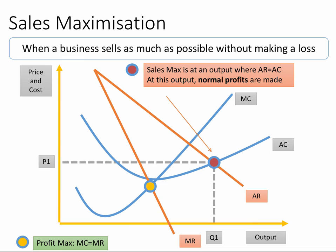Contrast that with sales maximisation. Sales maximisation is when a firm tries to produce as much output as it can — grow its sales, grow the business — subject to the constraint that it needs to make at least normal profit. You make normal profit where the average cost and average revenue curves meet at the break-even point. That's where normal profits are made. It's a higher output than revenue maximisation and involves a lower price, where P1 equals cost — covering your cost and maximising sales without making a loss.